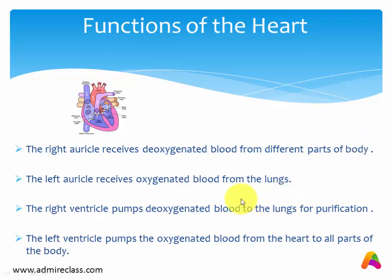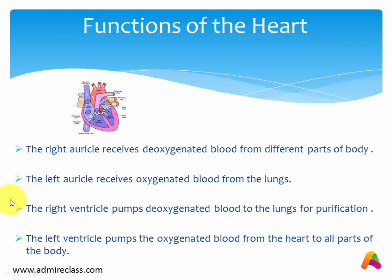Now, the functions of the heart. The right auricle receives deoxygenated blood from different parts of the body. The left auricle receives oxygenated blood from the lungs. The right ventricle pumps deoxygenated blood to the lungs for purification. The left ventricle pumps oxygenated blood from the heart to all parts of the body.